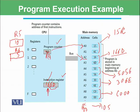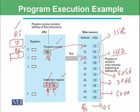Next, the instruction fetched from A4 is 5056. As soon as it is fetched, the program counter increments by 2, pointing to A6. Opcode 5 means add. The operands 056 indicate: add the content of register 5 with the content of register 6, and store the result in register 0. So 10 plus 5 equals 15, and 15 is stored in register 0 within the CPU.